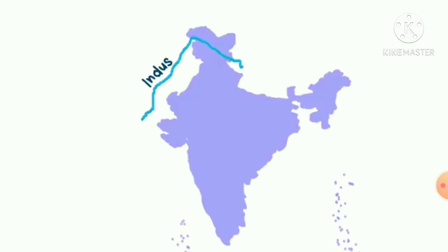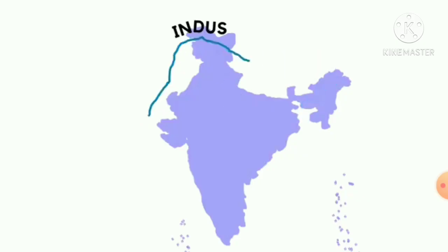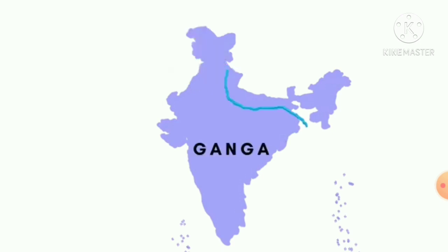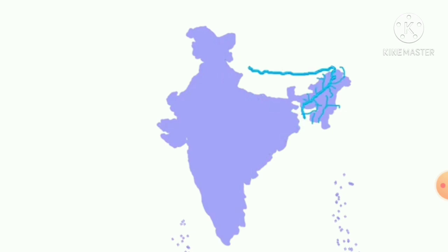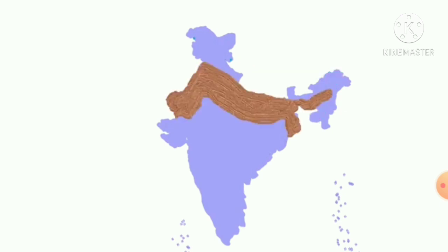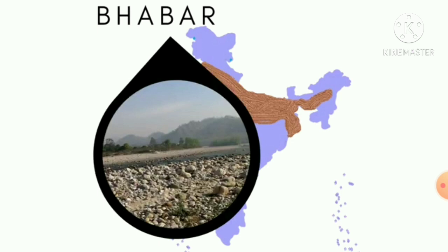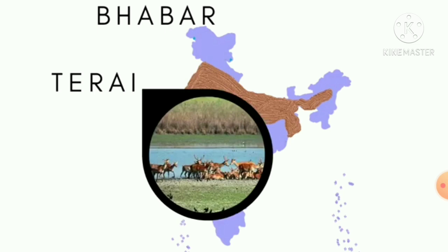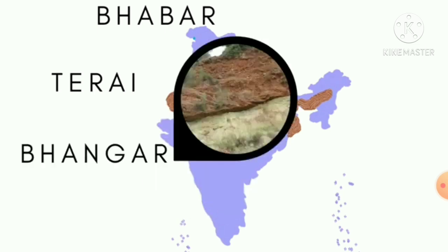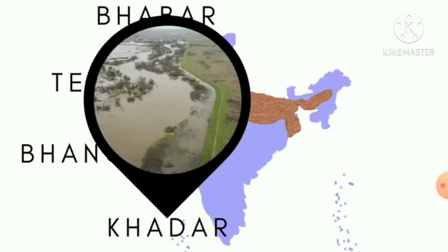The second important division of India is the Great Indian Plains. These Great Indian Plains are formed by three important river systems and their tributaries. The first is the Indus and its tributaries — Jhelum, Chenab, Ravi, Beas, and others. The second is the Ganga and its tributaries. The third is the Brahmaputra and its tributaries. These three rivers — Indus, Ganga, and Brahmaputra — form Hindustan's biggest plain, the Great Indian Plains.